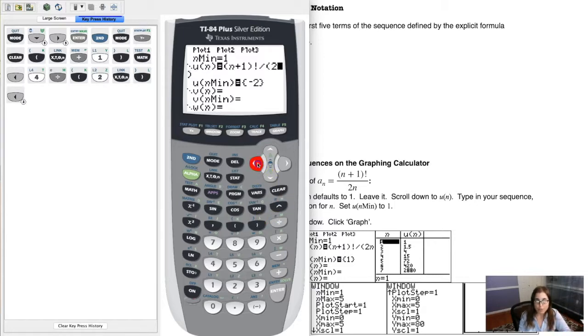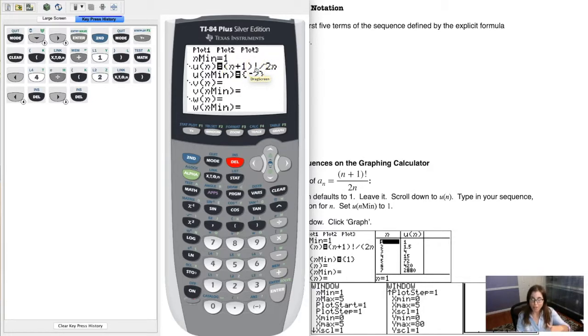I'm going to divide that by 2n. And I want to encourage you to really put parentheses around that denominator. And let me just talk a bit about what happens if you don't. So when you don't put the parentheses around the denominator, what your calculator is going to do is it's going to divide (n+1)! by 2, but it's going to multiply by n as opposed to dividing by n.